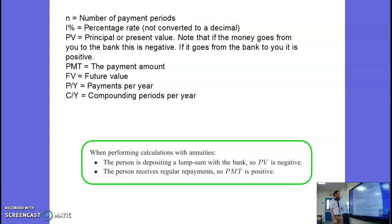So let's just recap what all those things on there mean. N on your calculator is number of payment periods, I percentage is the interest rate, PV is the present value, PMT is the payment amount, that comes up a lot in this. We are payment, we're giving ourselves a payment every month. Then we've got the future value, payments per year and compounding periods per year.